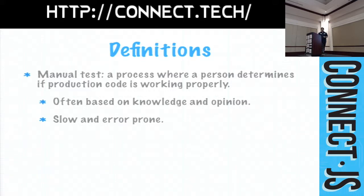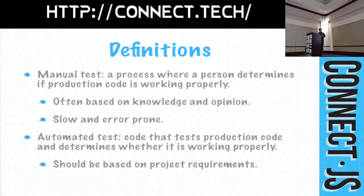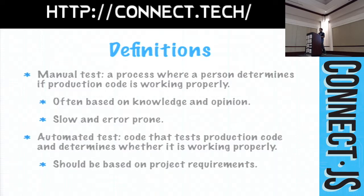As programmers, one of the things we like to do is automate manual processes. Automated testing is about taking that manual process and giving it to the computer. Why should you have to do all this laborious, boring, repetitive, detail-oriented stuff when you could spend your time doing more interesting things? Automated tests should be based on project requirements, not your implementation. If your automated tests are based on how you're doing things rather than what it's supposed to do, they become brittle — which is one of the biggest complaints people have about automated tests.